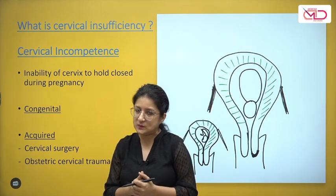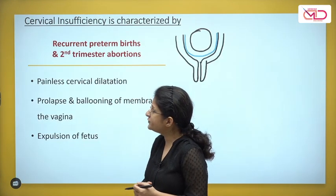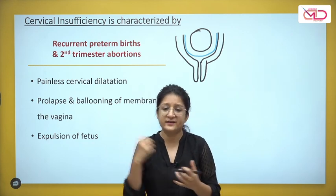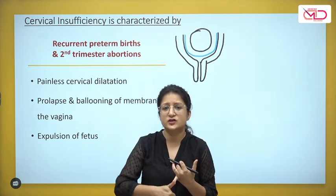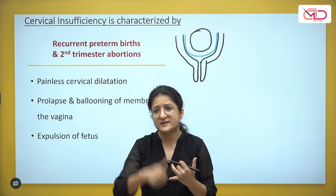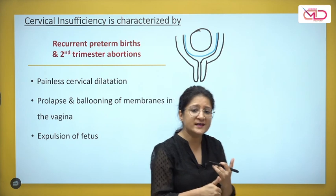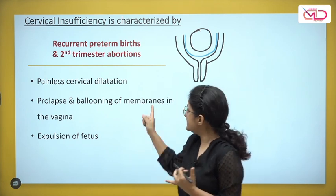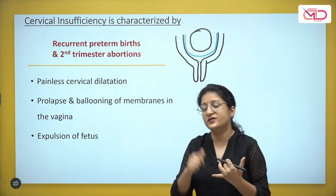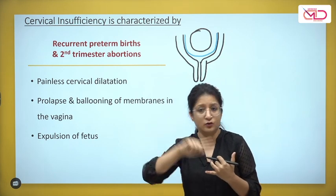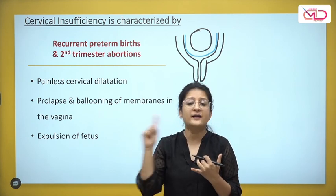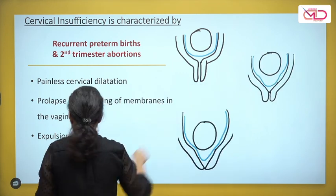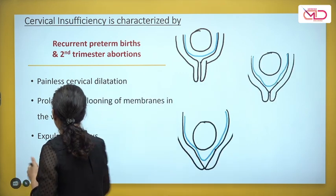Cervical insufficiency is typically characterized by recurrent preterm births or second trimester pregnancy losses. There is a very classical clinical history: firstly, painless cervical dilatation; prolapse and ballooning of the membranes can be felt in the vagina on examination; finally leading to expulsion of the fetus. Let's look at these diagrams to understand this progression.